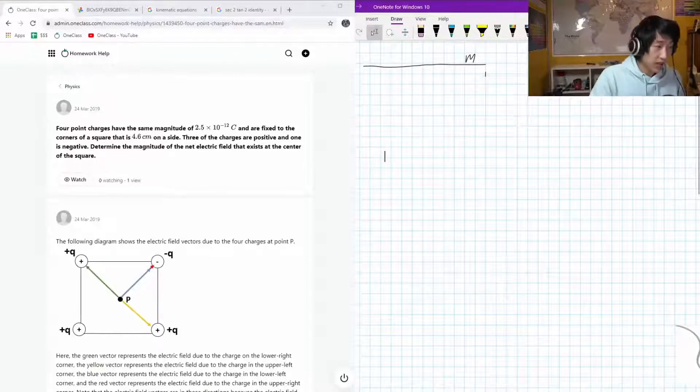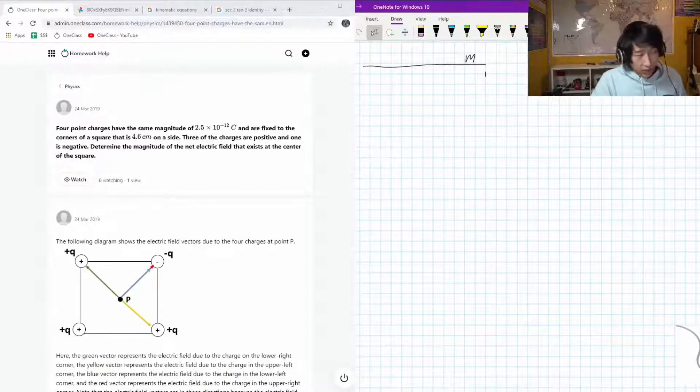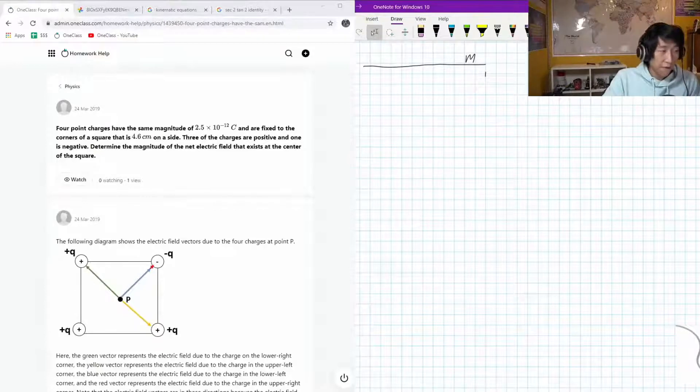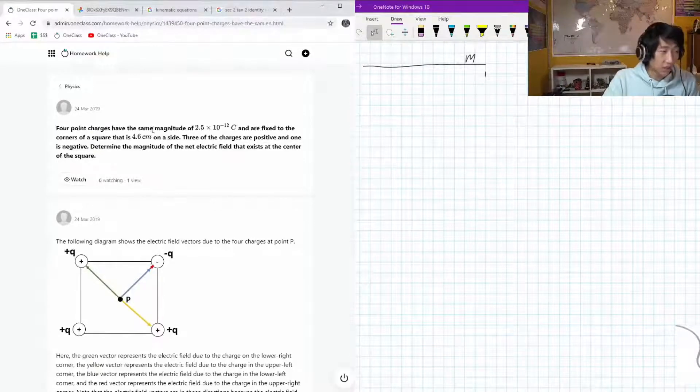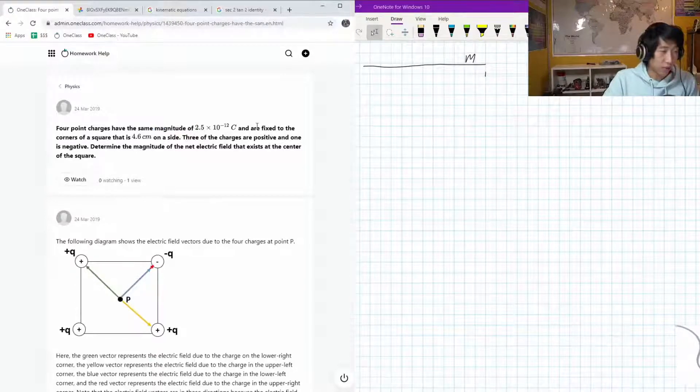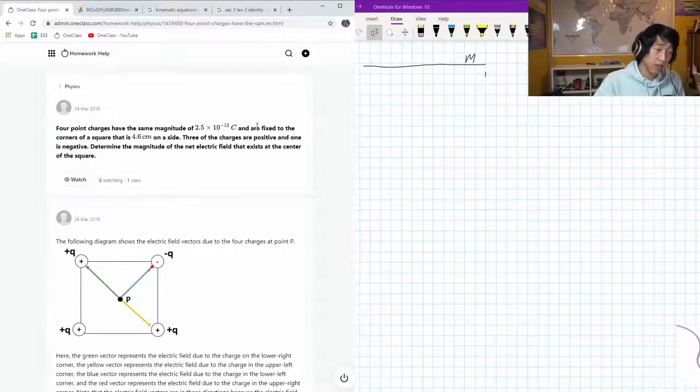Okay, so the next question that we have on the menu today is presenting a situation where we have four point charges all with the same magnitude of charge of 2.5 times 10 to the negative 12 Coulombs are fixed to corners of a square that are 4.6 centimeters on each side.